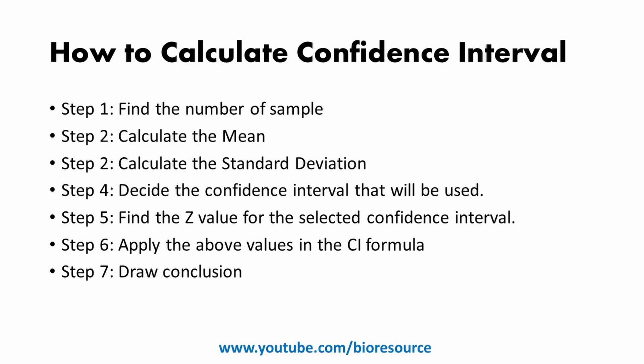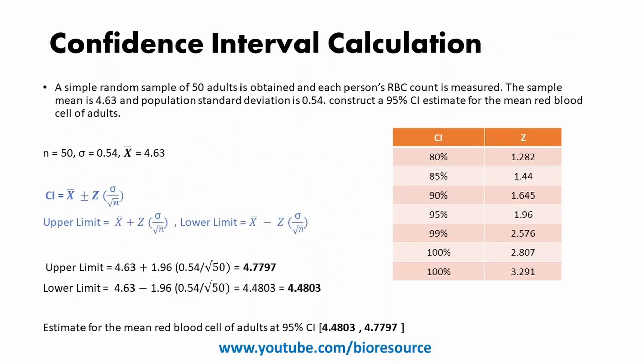Now let's look at an example. We have taken a simple random sample of 50 adults and each person's RBC count — that is, red blood cell count — is measured. The sample mean is 4.63 and the population standard deviation is found to be 0.54. We will construct a 95% confidence interval to estimate the mean red blood cell count of adults. Given: n equals 50, standard deviation equals 0.54, and sample mean equals 4.63.